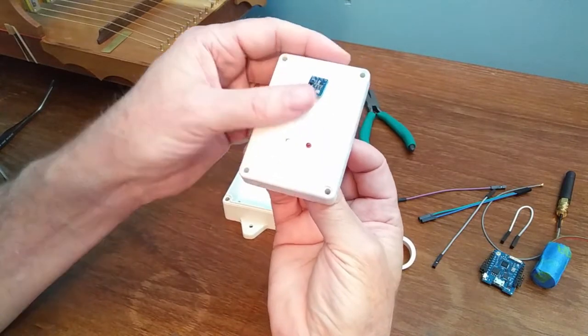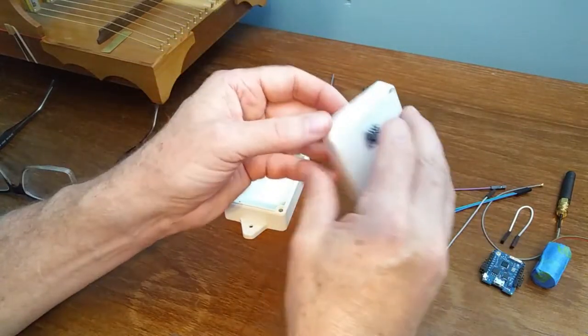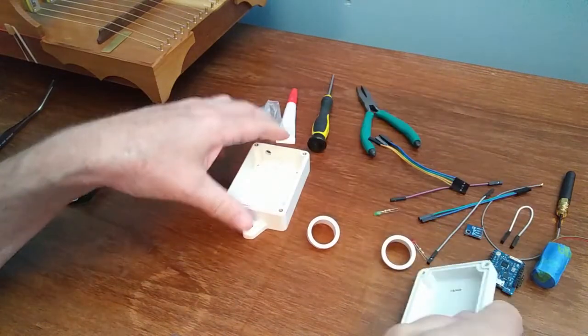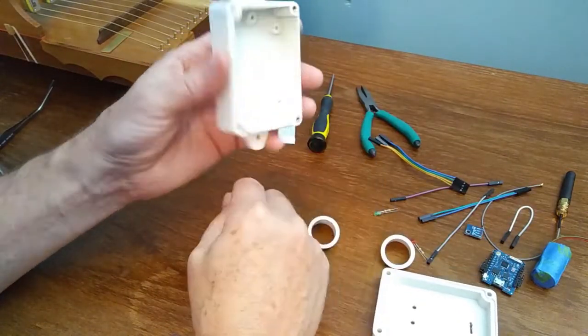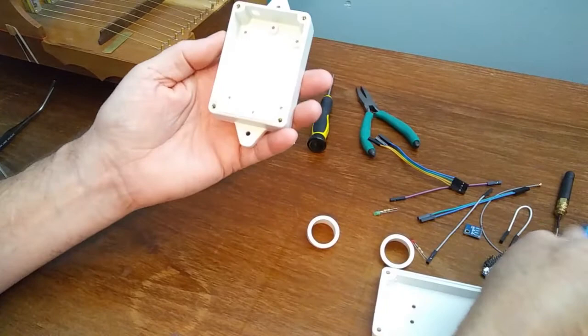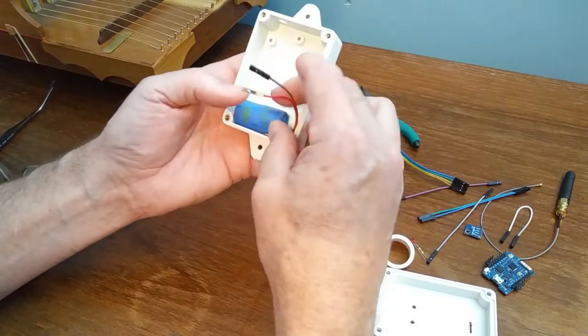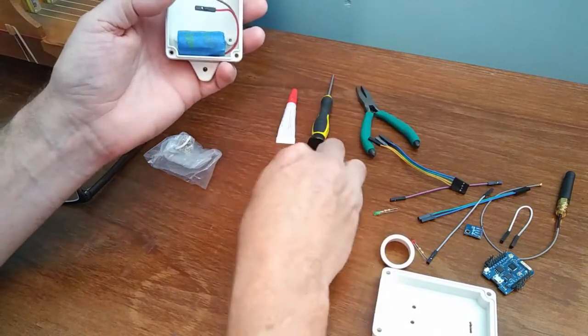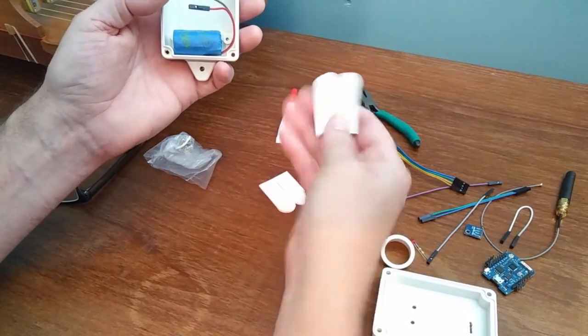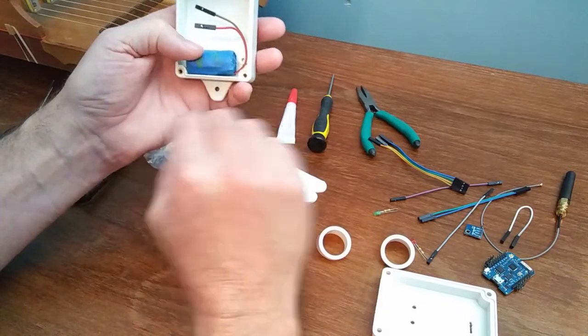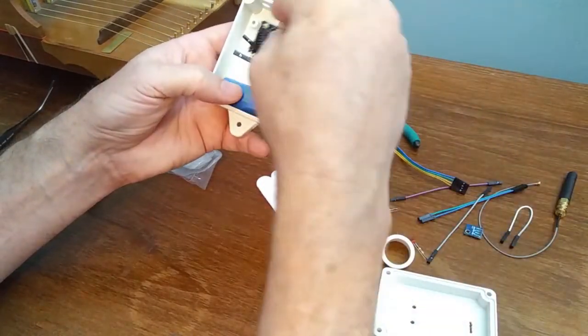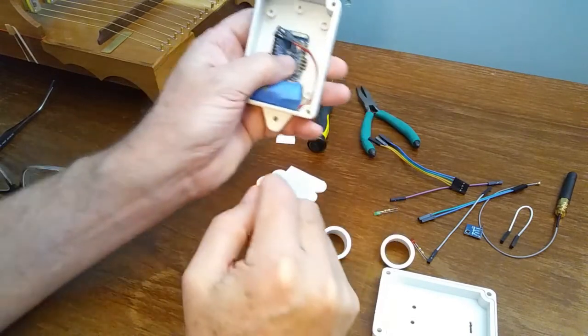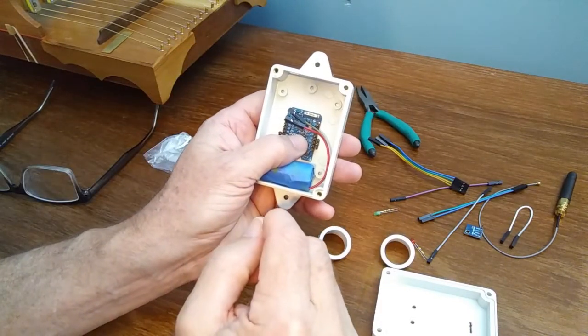These are three millimeter holes and they will accept these LEDs, which we'll put in there and glue into place. Here's the case itself. We're going to have that battery sitting in there—I've got little pieces of double stick tape, so we'll just set the battery in there and use double stick tape to stick that right on the back.